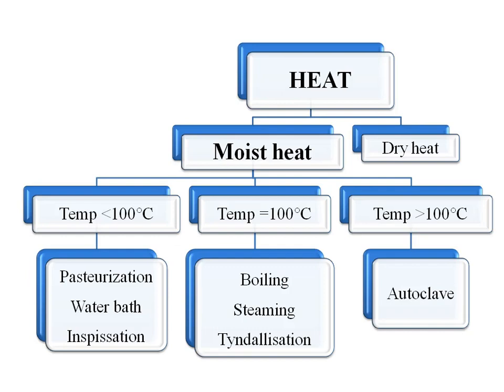Moist heat sterilization is a process in which we use water as a medium through which the heat is transferred. Since water boils at 100 degrees Celsius, moist heat sterilization is classified into three types: processes done at less than 100 degrees Celsius, at 100 degrees Celsius, and above 100 degrees Celsius. Examples for less than 100 degrees Celsius are pasteurization, water bath, and inspissation. At 100 degrees Celsius, examples are boiling, steaming, and tyndallization. The process involving above 100 degrees Celsius is autoclaving. Autoclaving is the most widely used method of sterilization in hospitals and most industries, so you should concentrate more on it.